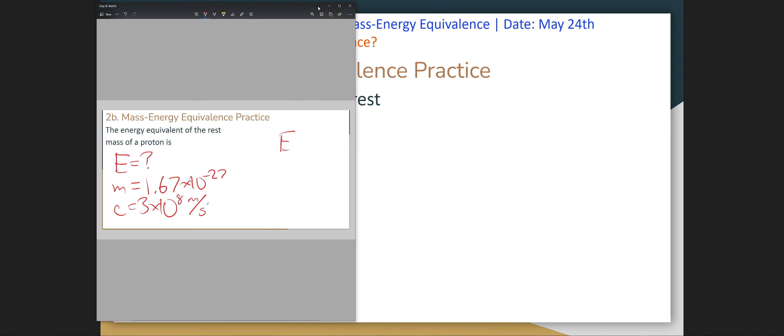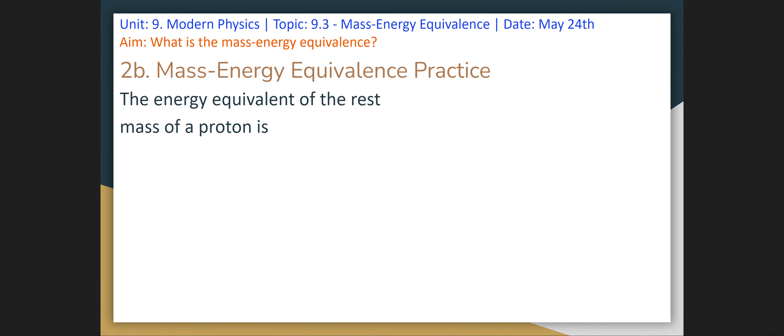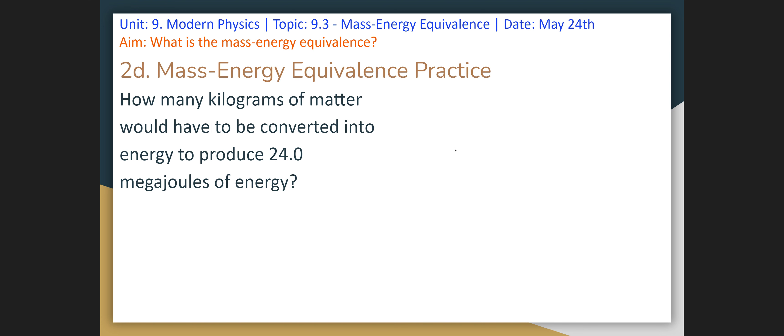You're going to do E equals mc squared. So E equals 1.67 times 10 to the negative 27 times 3 times 10 to the 8 squared. And then you should get a certain number. I'm not going to calculate it for you, but you get the gist. Problem 2c is the same exact thing. They give you the mass, you're solving for energy using the speed of light.